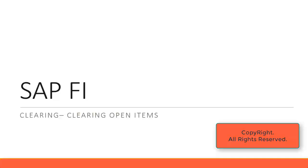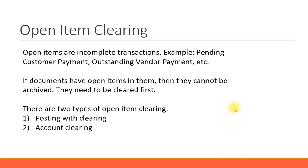Let's look at clearing open items in SAP. Open items are incomplete transactions — that's why they're called open items. If a transaction has been completed and cleared, it becomes a cleared item or cleared transaction. For example, if you are waiting for a customer payment to be made, then the customer invoice line item is considered the open item.